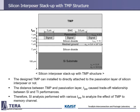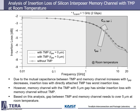The T-gap is the main design parameter of this research. This is the simulated insertion loss of the silicon interposer memory channel with TMP at room temperature. At low-frequency region, there are no clear differences between all three cases. However, at high-frequency region, due to mutual capacitance between TMP and memory channel increasing as T-gap decreases, insertion loss with the directly attached TMP is worse. Memory channel with TMP at 5 µm gap has similar insertion loss to memory channel without TMP. Based on this analysis, the gap distance between TMP and memory channel needs to be over 5 µm at room temperature. We can get the design guide of TMP at 2 Gbps at room temperature.